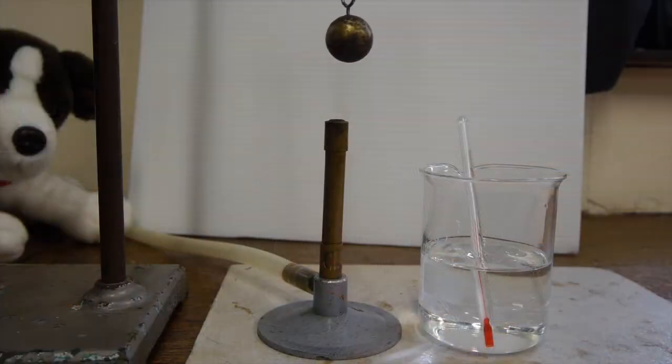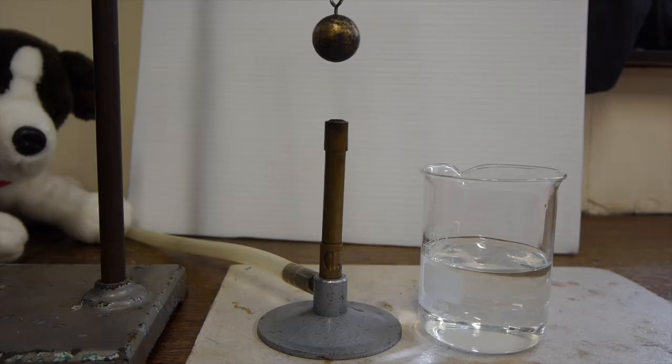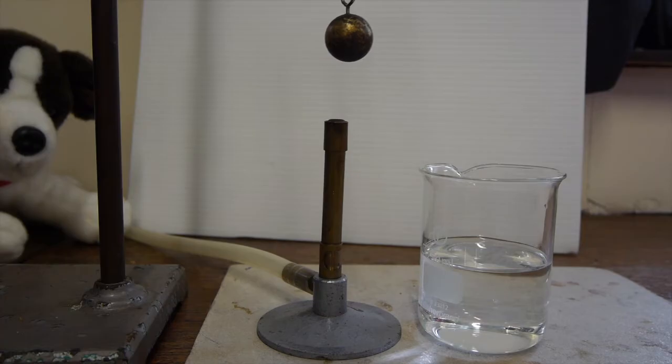Okay, so we're ready to go. I've measured the temperature of the water, which is room temperature, 20 degrees C. And the steel ball has been in the room as well all day, so that's also at 20 degrees C. So we'll turn on the Bunsen and start heating the steel ball, and we will have to leave it for a while to get up to the temperature of the Bunsen burner.